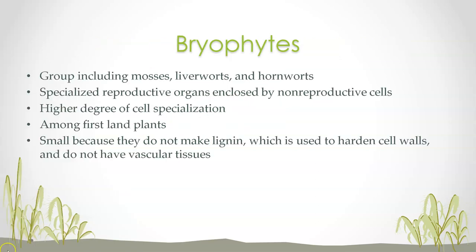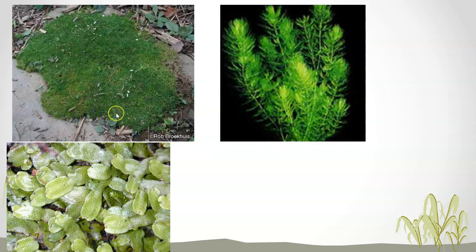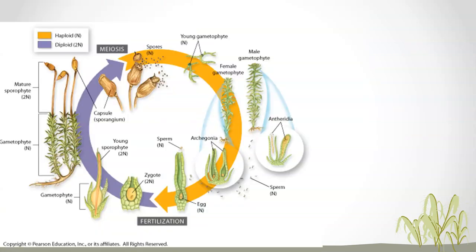Some terms to know about bryophytes: they include mosses, which show a higher degree of cell specialization, and they were among the first land plants according to secular evolution. They're very small. Mosses have a protective coating that makes them resistant to drying out, which is an increase in fitness. Rhizoids connect them to the land. The gametophyte here produces gametes and the sporophyte — the 2N — produces spores. Here's liverworts and hornworts as the examples of bryophytes.